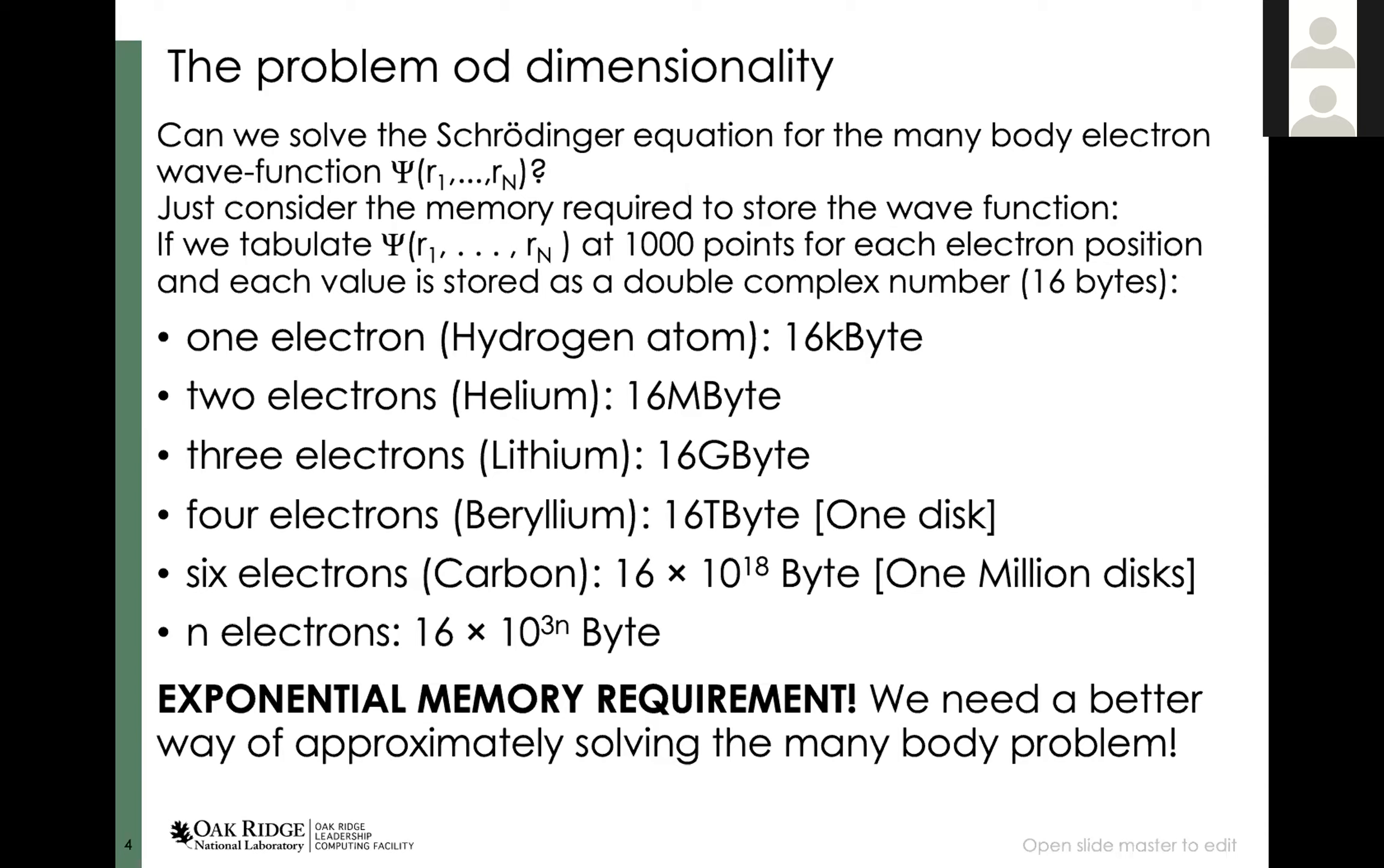In general, as you see, if we have n electrons, the amount of memory we need basically grows exponentially. And it's not only the memory, but also the computation. If you were to compute this, you would have to touch each memory location at least once. So also computationally, we know that the effort has to grow exponentially. So except for the very simplest molecules or atoms, it is totally unfeasible to directly solve the many-body Schrödinger equation.